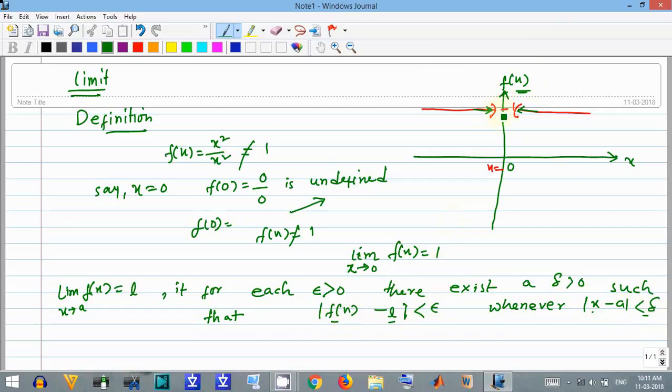At x equals 0, there is no value of f(x), as f(x) is undefined at x equals 0. But if we approach x to 0, the value of the function, the limit, equals 1.